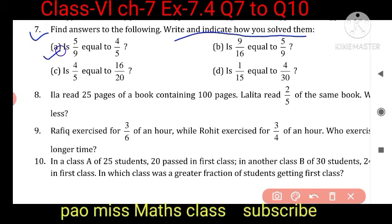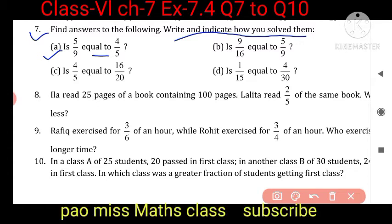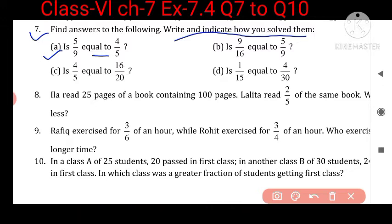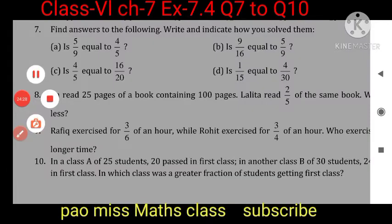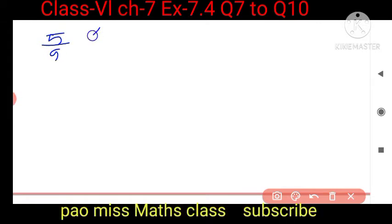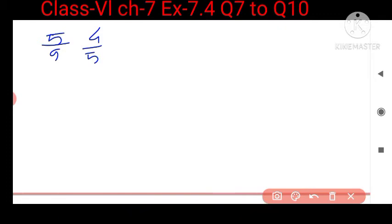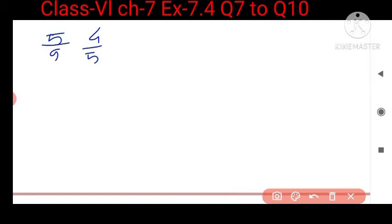Part a: is 5 upon 9 equal to 4 upon 5? We have to solve and write how we solved them. The given fractions are 5 upon 9 and 4 upon 5. We have to check whether they are equal or not. They are not like terms and their numerators are also not equal, so we will find the LCM.